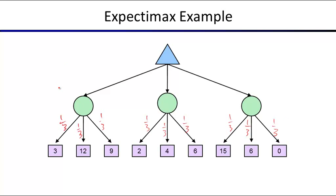For the first chance node we get 8, for the second one 4, and for the third one 7. At the top maximizer node, the value is 8. So what will happen: the maximizer will go to the left branch. We have an expected value of 8, but there's no expectation that the maximizer will actually get 8 — it'll be 3, 12, or 9. It's just the expected value, and then randomness decides the actual outcome.